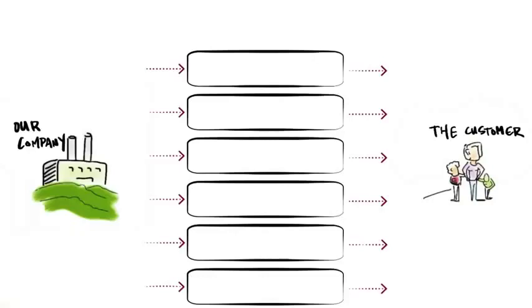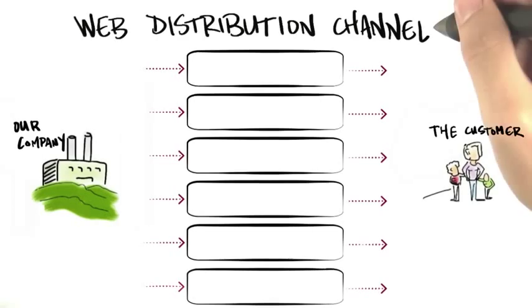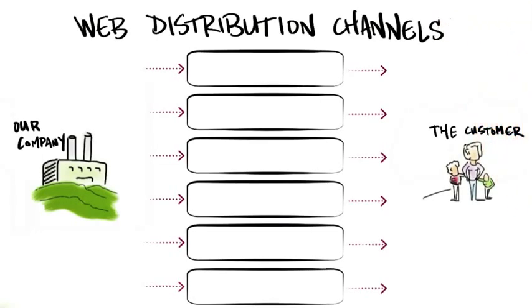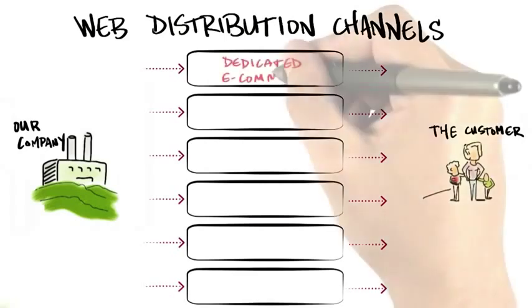If you remember in our last slide, one of the choices was whether you were using physical or virtual distribution channels. Let's take a look at virtual channels, which are not only the web, but also might include iPhone apps or the cloud as well.